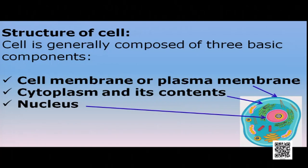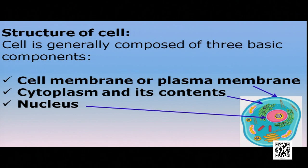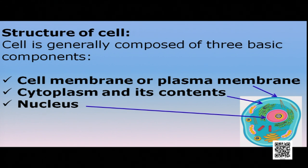Now, the structure of cell: basically all cells have three basic components — cell membrane (or plasma membrane), cytoplasm and its contents, and nucleus. We will start with cell membrane.